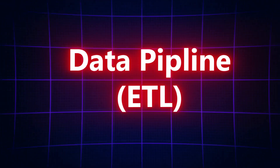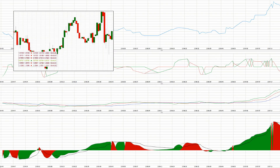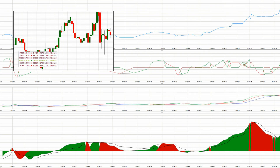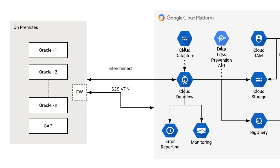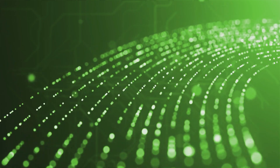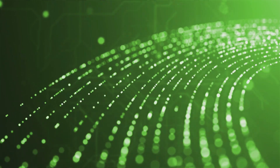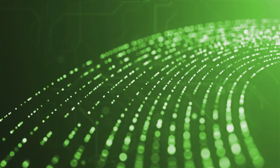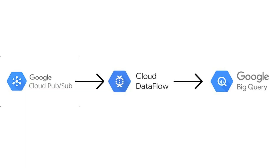You will design systems that extract data from different sources, transform it, and load it into a warehouse — that's what we call ETL. Tools on GCP like Dataflow and Airflow help you automate these steps.